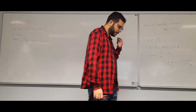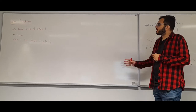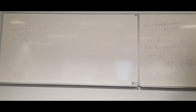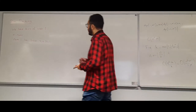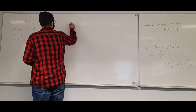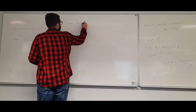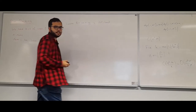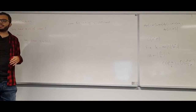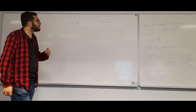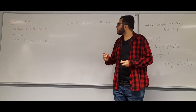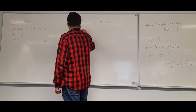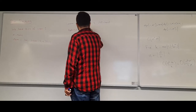We want the minimum number of bins needed. Bin packing is NP-hard, and I want to prove this because the proof also tells us something about approximability. The NP-hardness proof is a reduction from set partition, which is a well-known NP-hard problem.